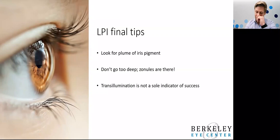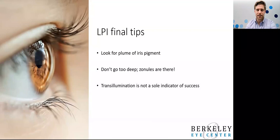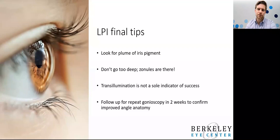Look for that plume of iris pigment — that tells you you're through. Don't go too deep because there are zonules there, and transillumination is not a sole indicator of success. You really want to see something behind it. Sometimes they're too far in the periphery or the patient has arcus, making direct visualization more challenging. There can be a non-pigmented membrane covering the area. I like to do a repeat gonioscopy in about two weeks to confirm the angle anatomy has improved. If not, you can discuss cataract surgery or laser pupilloplasty.